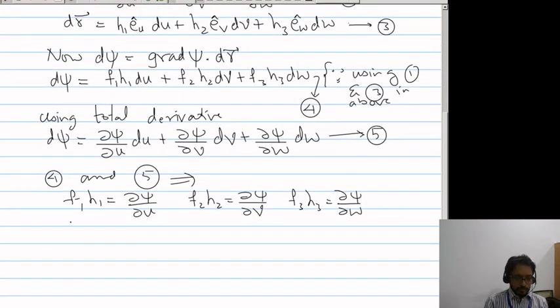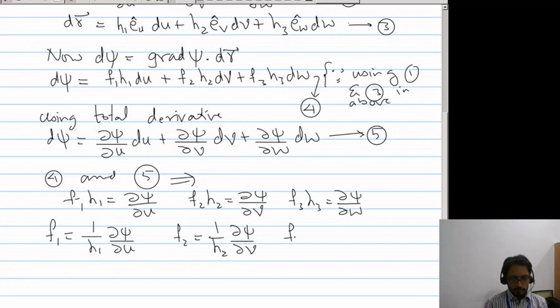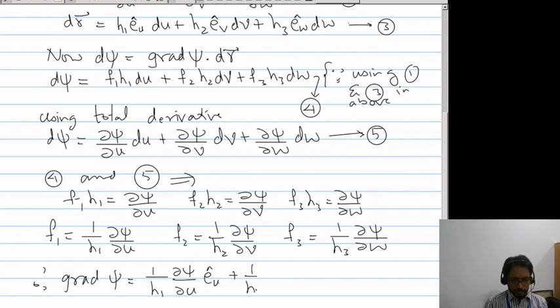We wanted expressions for f1, f2, f3. f1 is 1/h1 ∂psi/∂u, f2 is 1/h2 ∂psi/∂v and f3 is 1/h3 ∂psi/∂w. Therefore, grad psi is 1/h1 ∂psi/∂u e_u plus 1/h2 ∂psi/∂v e_v plus 1/h3 ∂psi/∂w e_w.